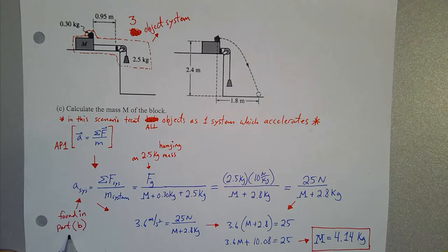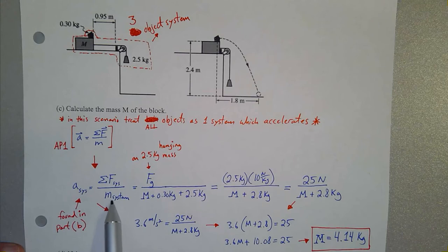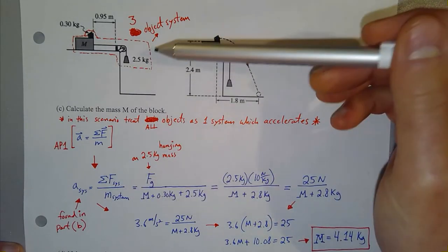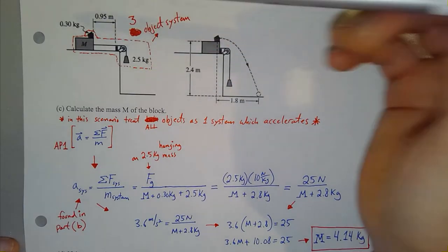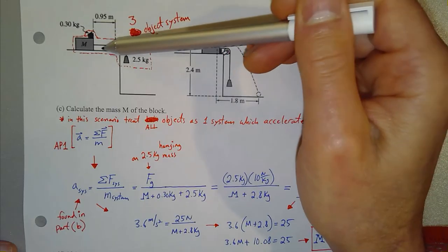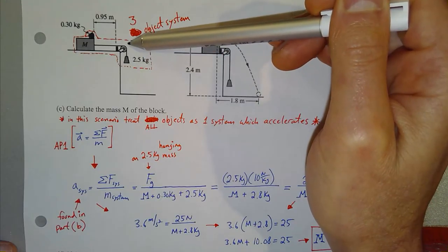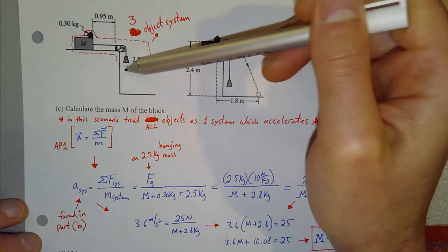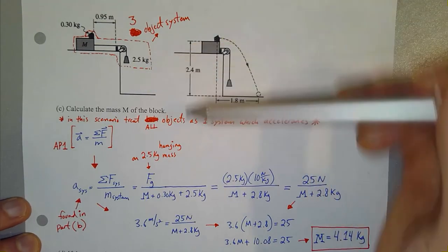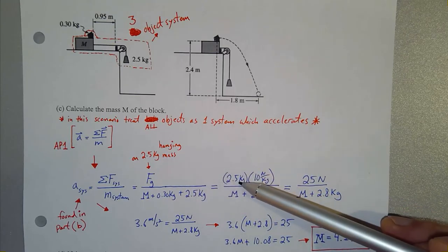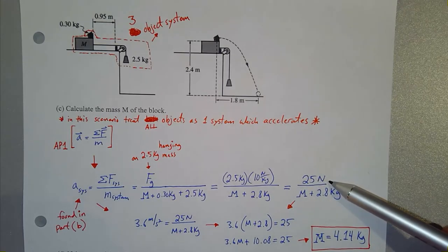From Part B, we know the acceleration is 3.6 meters per second squared. Now we need the net force on the system. The gravitational force on the block and ball is canceled by the normal force from the table. The tension forces on each side cancel each other out. The only unbalanced force is gravity on the 2.5 kilogram hanging mass — which is just its mass times gravitational field strength, giving 25 newtons as the net force.